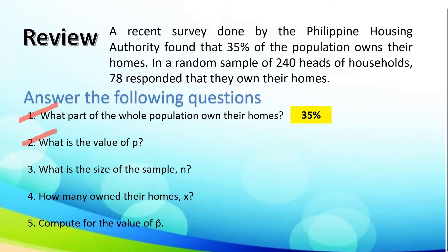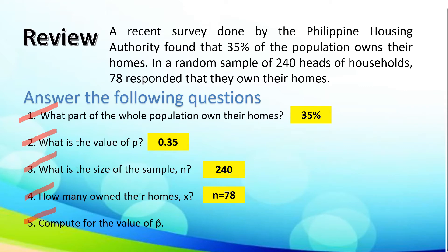Second, what is the value of P? Since the population is 35%, that is 0.35. Next, what is the size of the sample? In the given statement, our given N is 240 heads. Number 4, how many own their homes? Given, there are 78 who responded that they own their homes. And last, compute for the value of P-hat, which is 78 over 240, which is equivalent to 0.325.